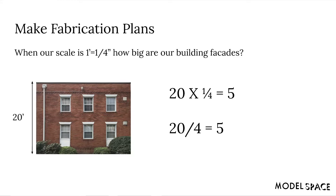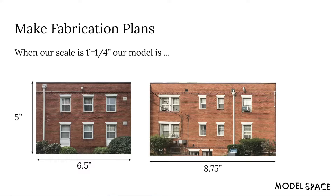It just takes a little simple math to figure this out. Let's use our 20-foot height as an example. To convert our 20-foot height down into a 1 foot equals 1 quarter inch scale, all we have to do is multiply that real-world dimension by our model building scale. So that would be 20 multiplied by 1 quarter, which equals 5. Another way to think about this is we could divide 20 by 4, which also equals 5. So our built model would actually be 5 inches tall, and we can apply those same steps to all of our real-world dimensions. So at our model scale, the building is 5 inches tall, our short side is 6 and a half inches, and our long side is 8 and 3 quarters of an inch. I chose the scale 1 foot equals 1 quarter inch because I wanted to make my building facade fit on an 8 and a half by 11 sheet of paper that I could print out.